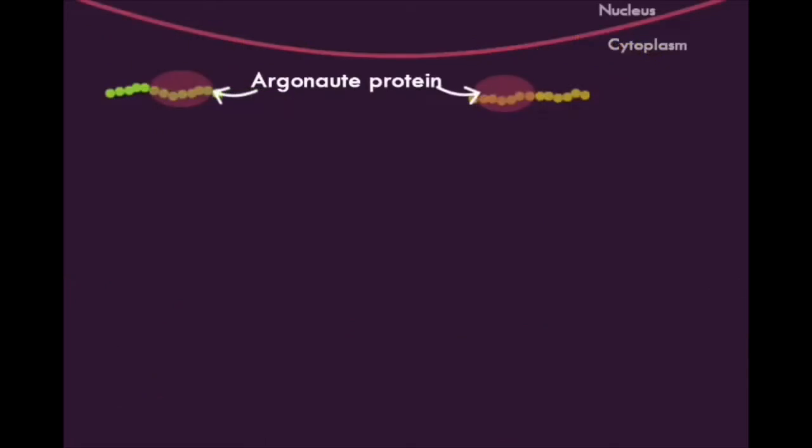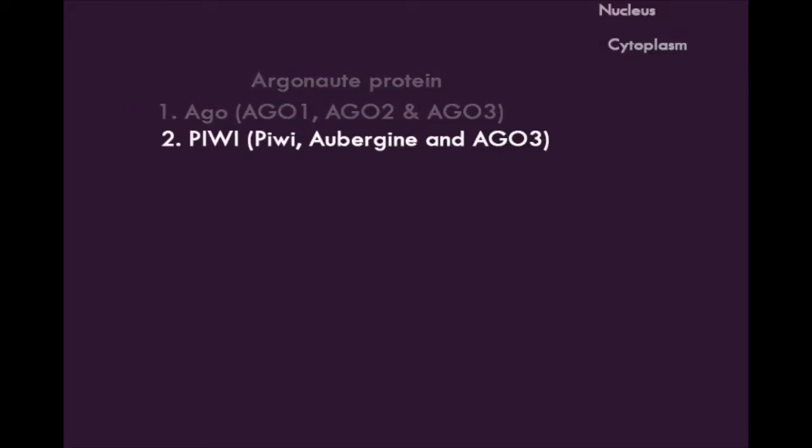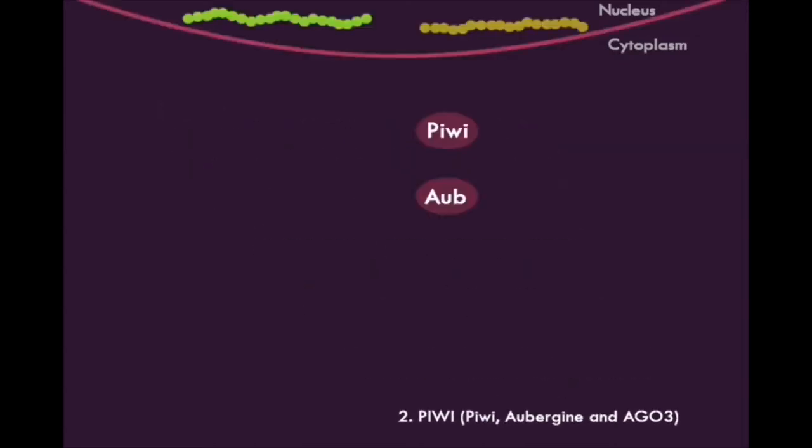Argonaute proteins can be phylogenetically divided into the Argonaute clade, which can be composed of Argonaute 1, 2, and 3, or the PIWI clade, composed of PIWI, Aubergine, and Argonaute 3. We will be focusing on the PIWI clade for PI-RNAs.